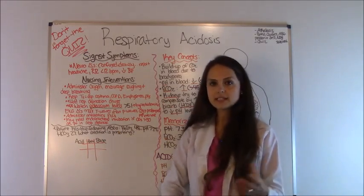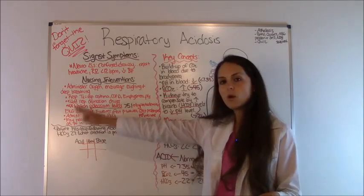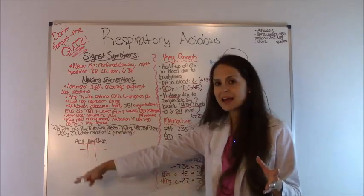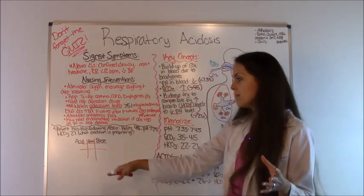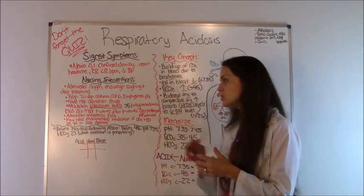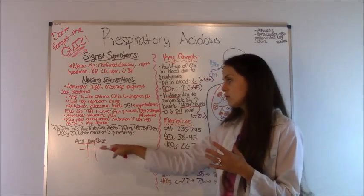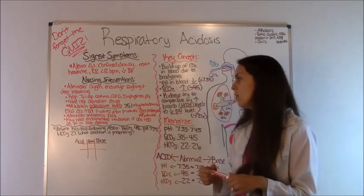Remember as a child we would play tic-tac-toe, so just set it up with your lines. Name one column acid, one normal, and one base. Now we are going to plug these values in to whether it's an acid or a base, so let's take it one by one.